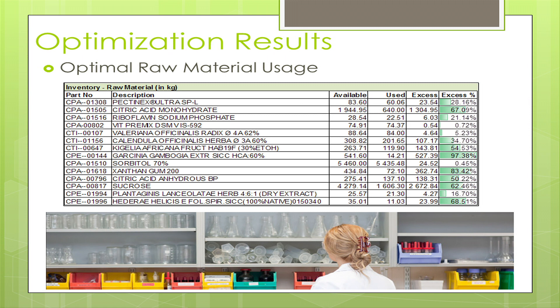The optimization results also show optimal raw material usage. Citric acid monohydrate, Garcinia cambogia extract, and xanthan gum are in significant excess. There could be other reasons for this — for instance, the company may buy in bulk at lower unit cost. However, if this were a just-in-time manufacturing company, ingredients exceeding around 70% surplus could be purchased differently to optimize just-in-time manufacturing.